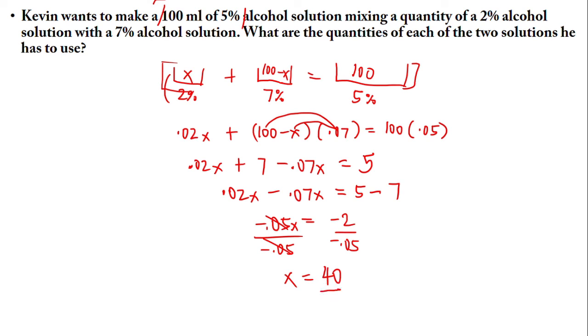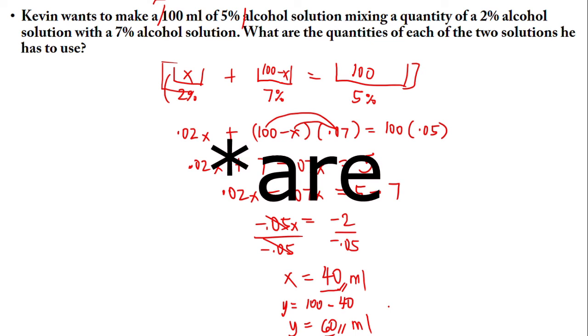But what about the second volume? Our second volume, our y, now that we have the value of x. I mean, the volume of x itself. So that is 100 minus 40. Y is now equal to 60. So these are the two. So these are our two answers. These are the unknown volumes. So that's it. Just have to put ml. So to answer this problem, the quantities of the two solutions Kevin has to use is 40 ml and 60 ml.